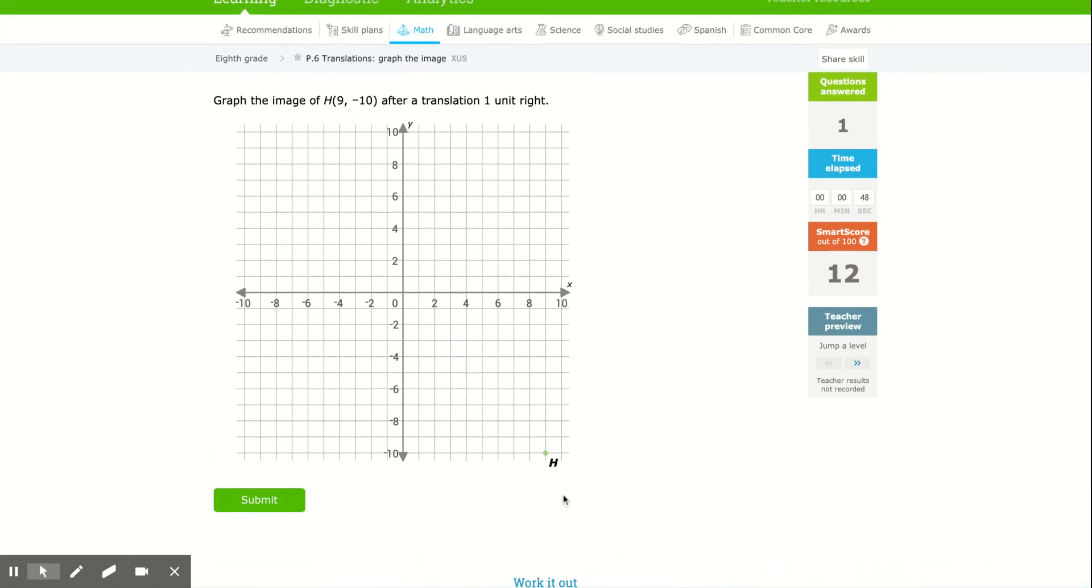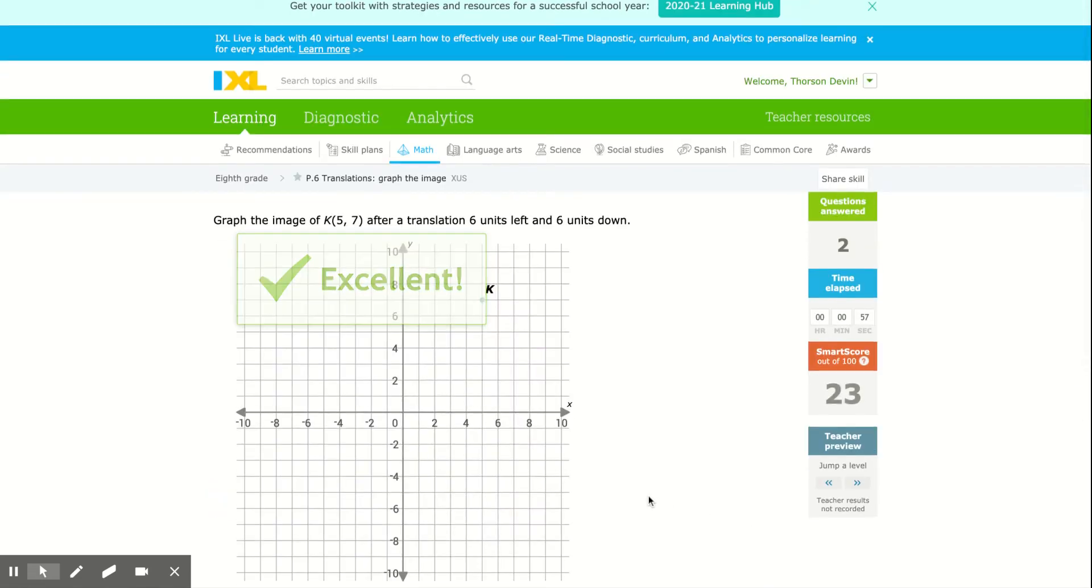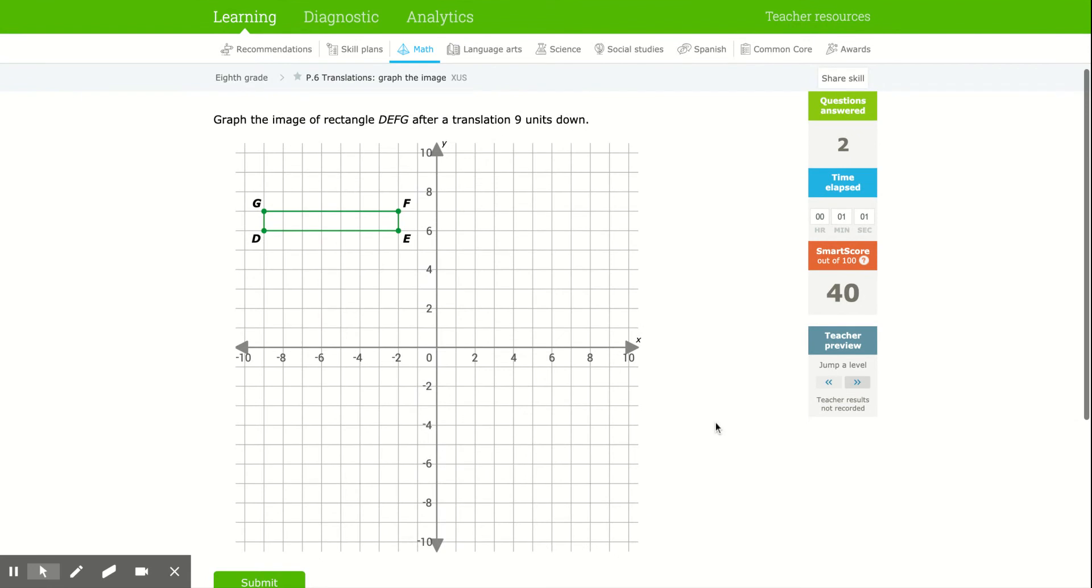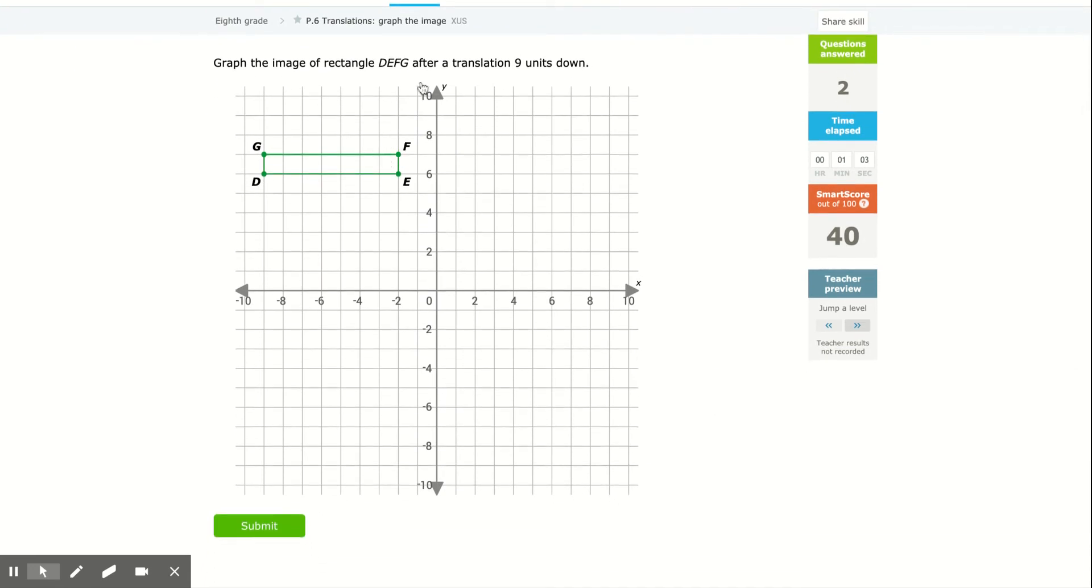So again, they give you the point on the graph. They say translation of one unit to the right, which is going to put it closer to the edge. That's one unit to the right, and we're good. And it's going to do a few with points, and then it's going to start giving you images. But the process is exactly the same.